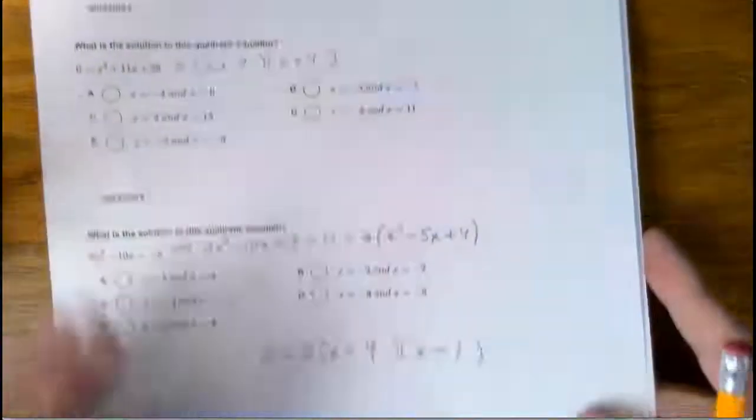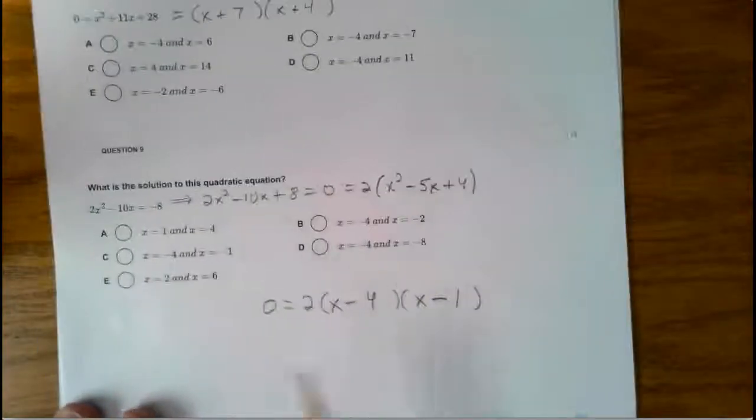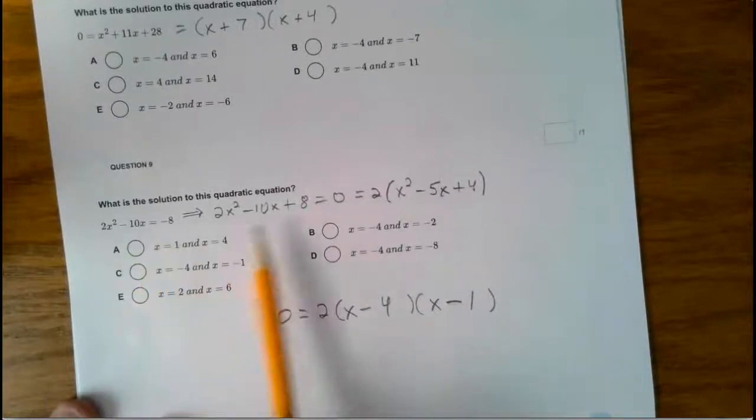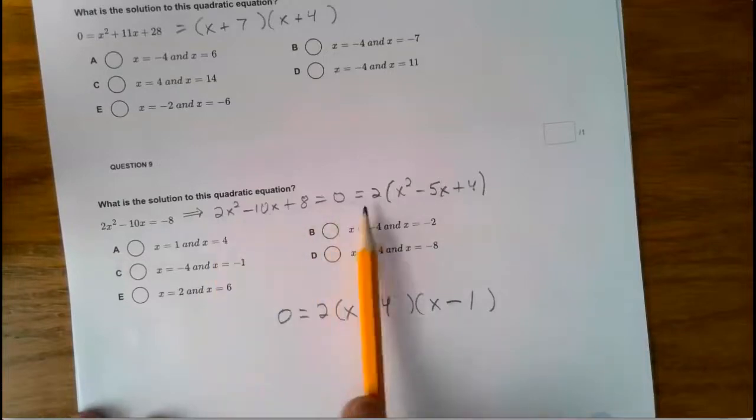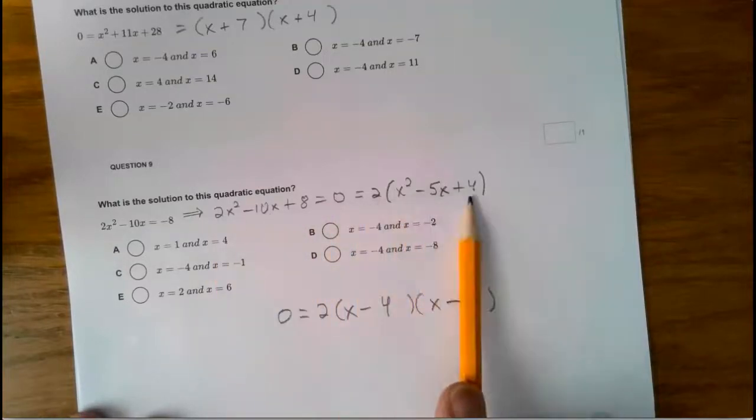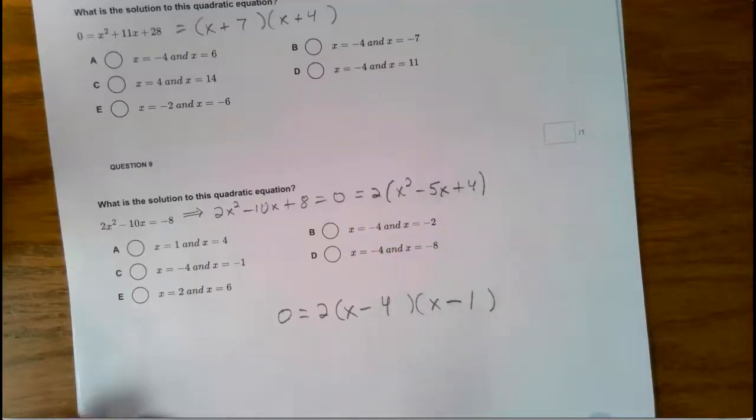Number 9. You had to first get it in standard form by adding 8 to both sides so it looked like this and it was equal to 0. Had a greatest common factor of 2. I took it out. I factored that. So our answer is going to be either 4 or 1. That's it. Thank you.